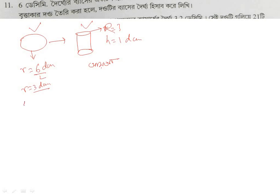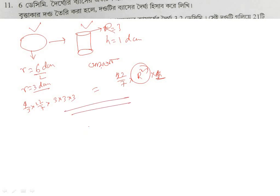So we have 4/3 π r³, we have 4/3 π r³, π r² h, π r² into h. Here h is 1 decimetre. We need to get a distance — this field is the distance of the distance to the distance.